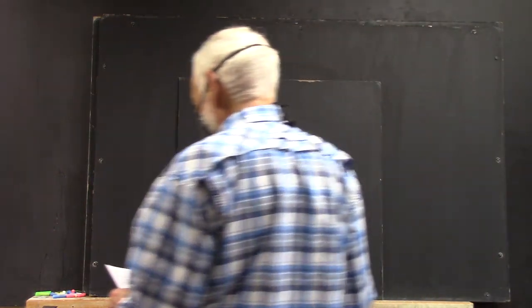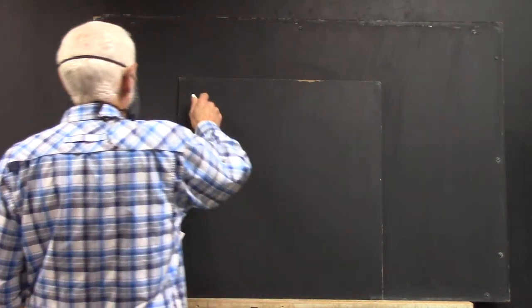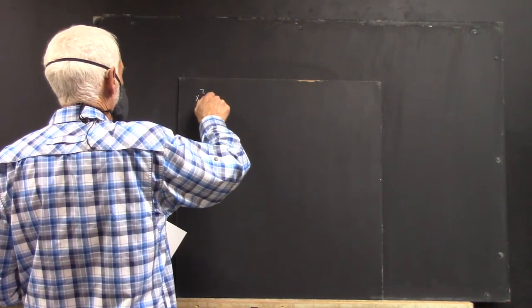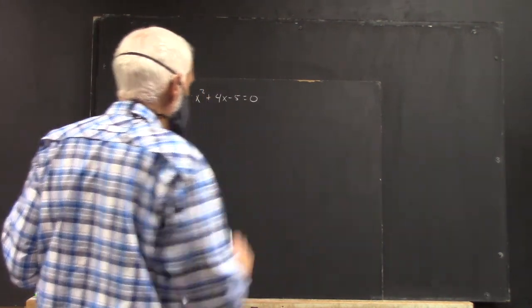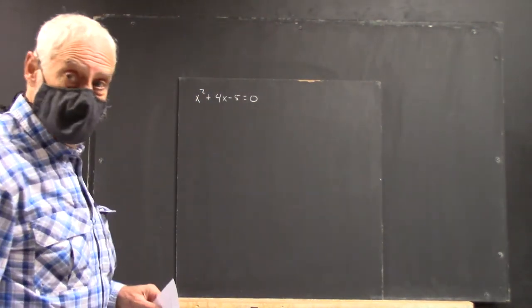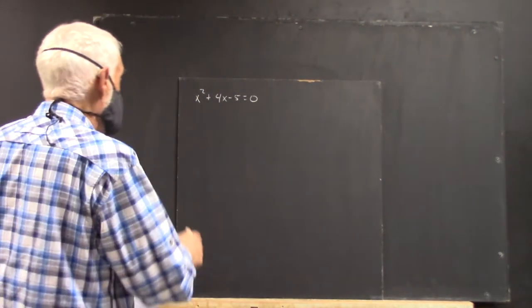Okay, we have some fairly straightforward problems from McQuest. We've got the equation x squared plus 4x minus 5 equals 0. In order to solve this, we factor.